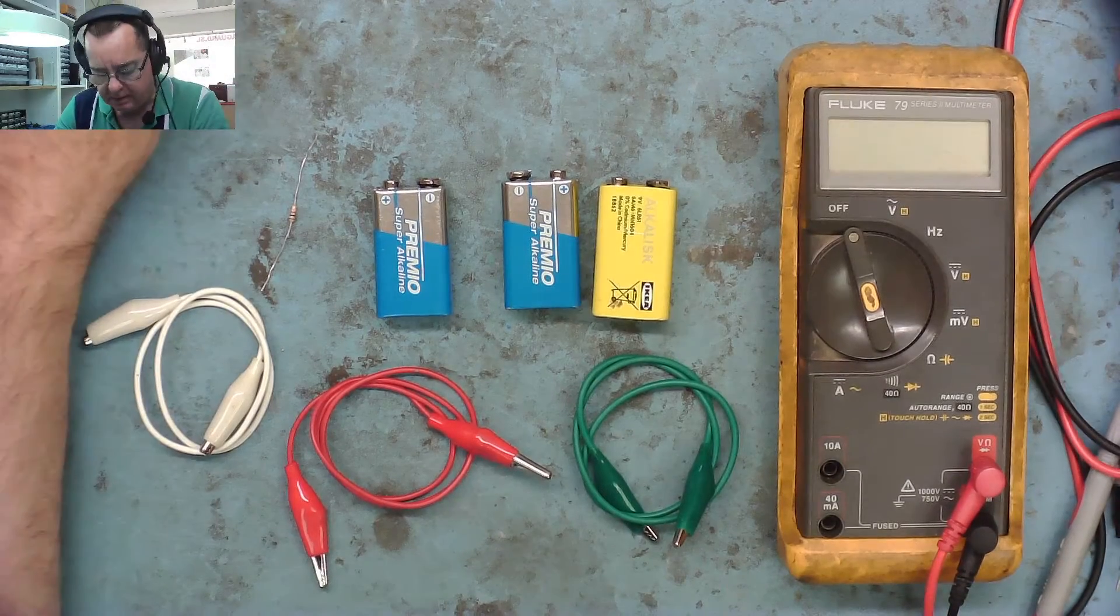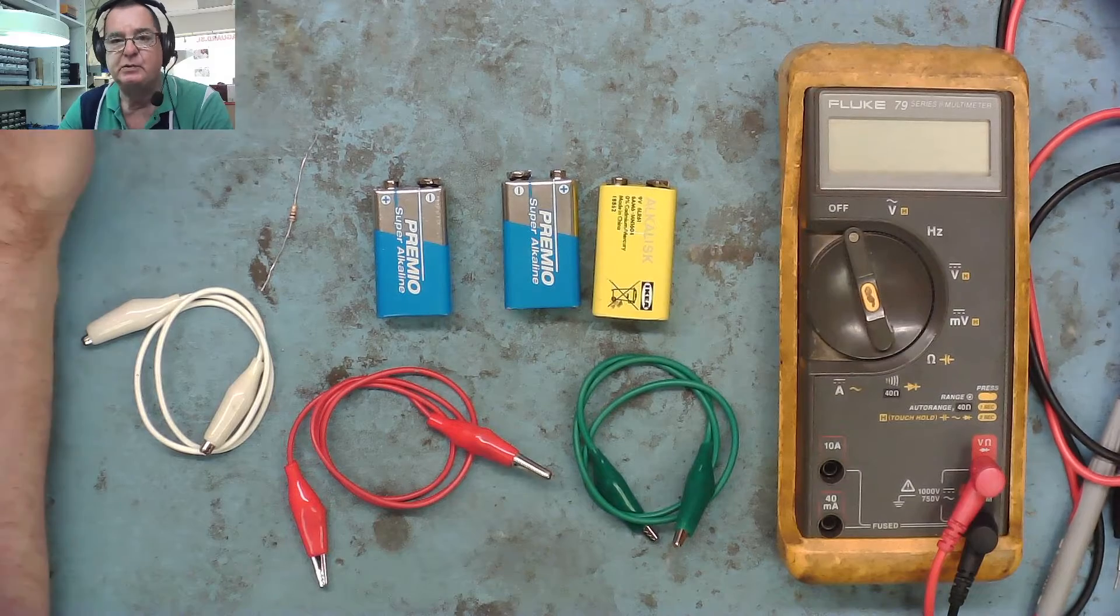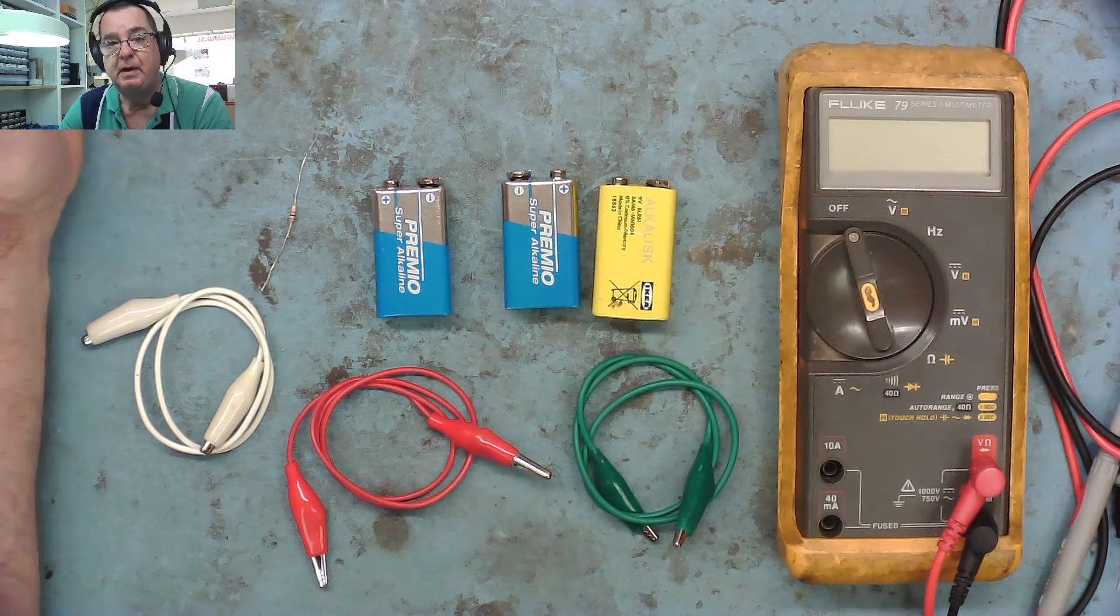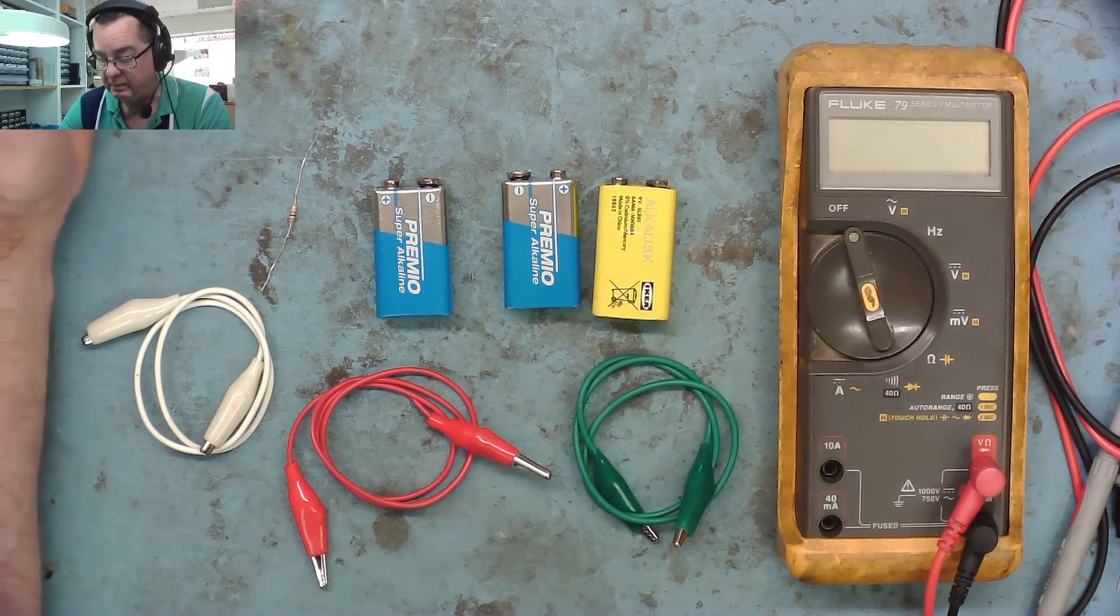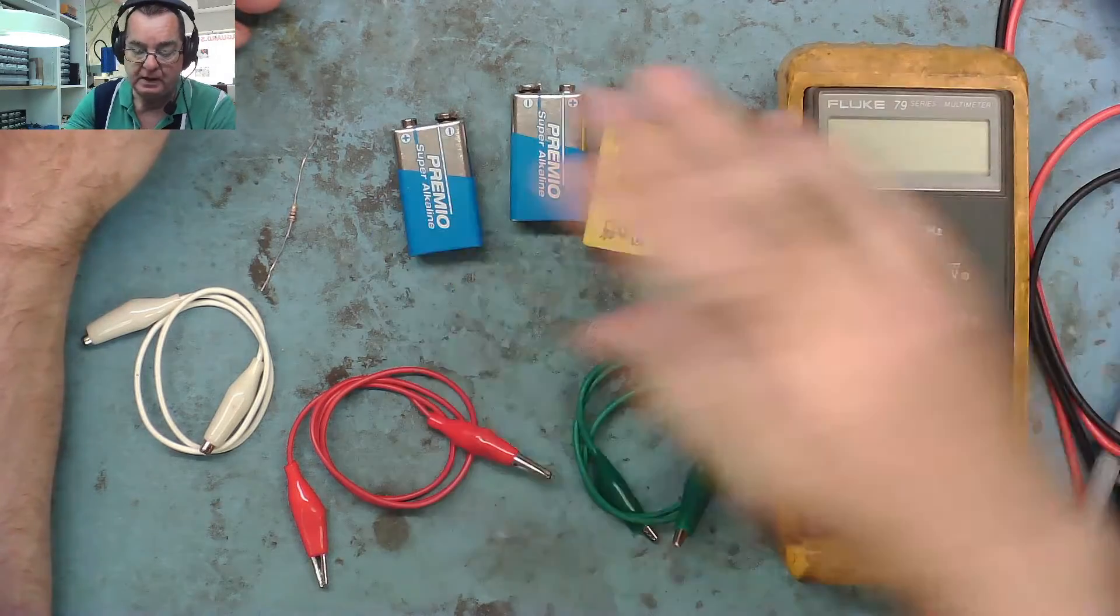Today we're going to make a simple Zener diode tester without using a bench power supply or any expensive equipment. All we're going to use is a multimeter, some 9-volt batteries,